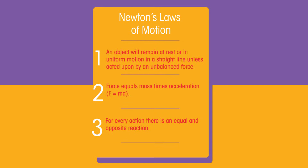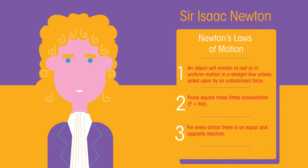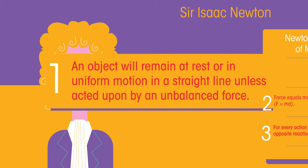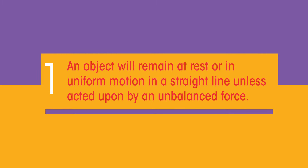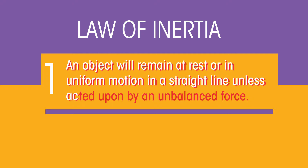In physics we have three fundamental laws of motion created by Sir Isaac Newton way back in the 17th century. Today we are looking at the first law of motion, sometimes called the law of inertia. Newton's first law says that an object will remain at rest or in uniform motion in a straight line unless acted upon by an unbalanced force.